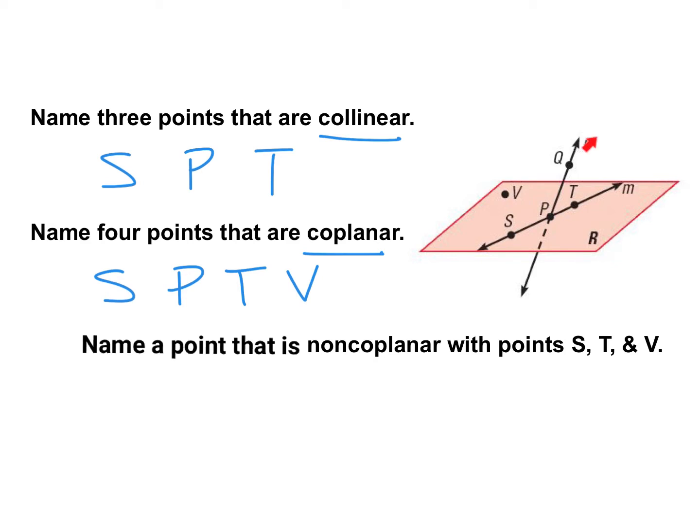Okay. So if it doesn't have a point associated with it, it's probably the name of that same thing. Lastly, name a point that is non-coplanar with points S, T, and V. So if it's non-coplanar, it cannot be on the same plane. And S, T, and V are on this plane that we see here, this flat surface. Notice how there's a line sticking out or going through it. And point Q is nowhere near on this flat surface. So Q would be non-coplanar with the rest of the points.